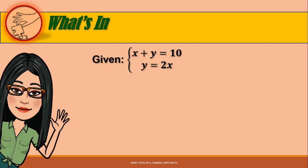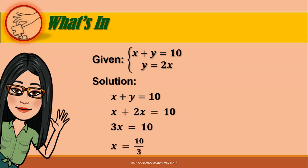Given that equation 1 is x plus y is equal to 10, and equation 2 is y is equal to 2x, we can substitute 2x for y in equation 1, which is x plus y is equal to 10. Because in equation 2, y is equal to 2x. Therefore, we have x plus 2x is equal to 10, so 3x is equal to 10, and x is equal to 10 over 3. Now let us substitute 10 over 3 for x in the second equation, which is y is equal to 2x. We have y is equal to 2 times the quantity of 10 over 3.